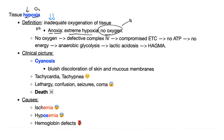No oxygen means defective complex four in the electron transport chain. No ATP, no energy, leading to shifting from aerobic glycolysis to anaerobic glycolysis, increased production of lactic acid, lactic acidosis, and HAGMA — high anion gap metabolic acidosis. You'll find metabolic acidosis and the anion gap is high.